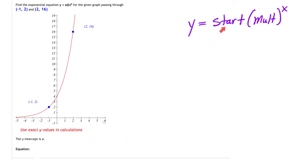Our goal is to be able to find the starting value and also the multiplier. We're going to start by trying to find the multiplier first. Before we begin we need to make sure we put the information into a table. So put in negative 1 comma 2 and also 2 comma 16 and leave space for a zero to go in there also. That's where you're going to find your starting value.